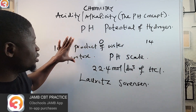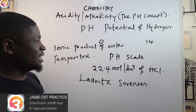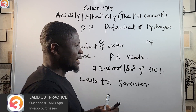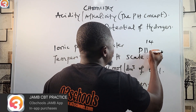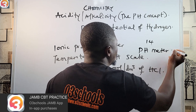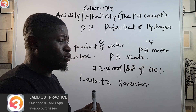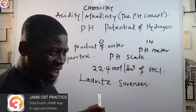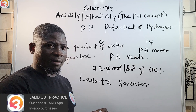pH means potential of hydrogen, and it is measured using a pH meter. A pH meter is what you use to measure the pH of a substance.